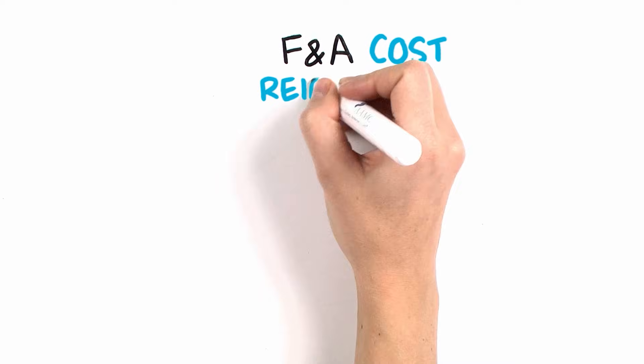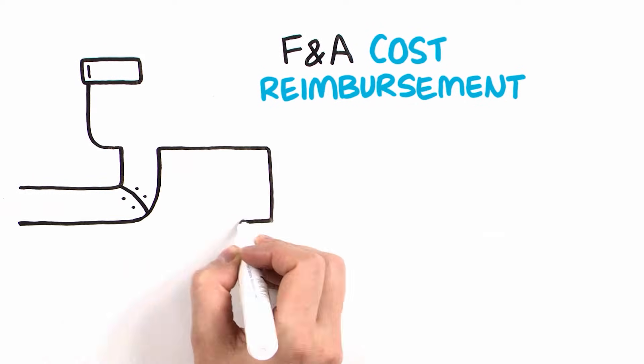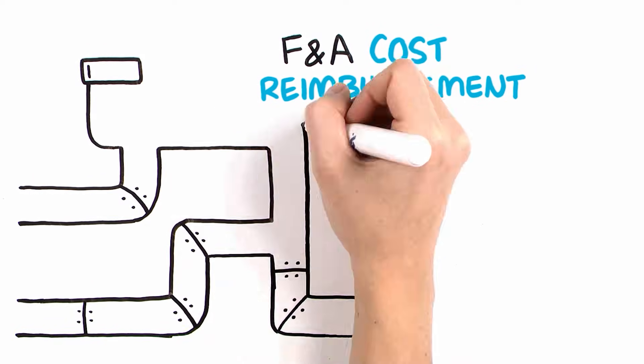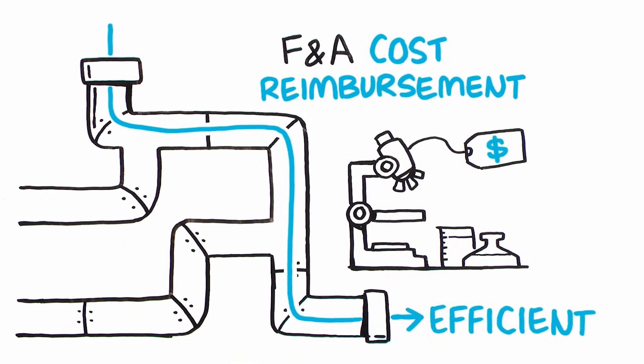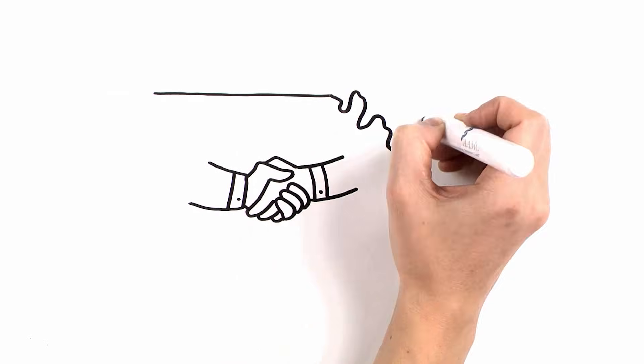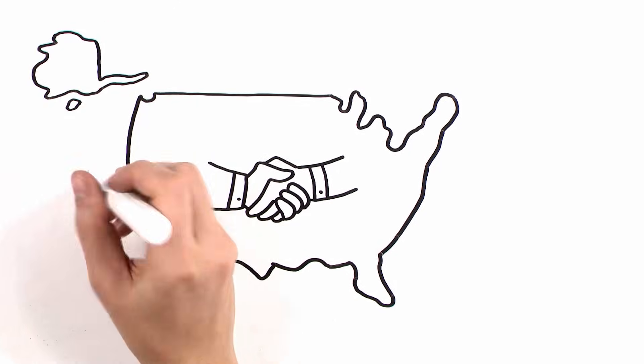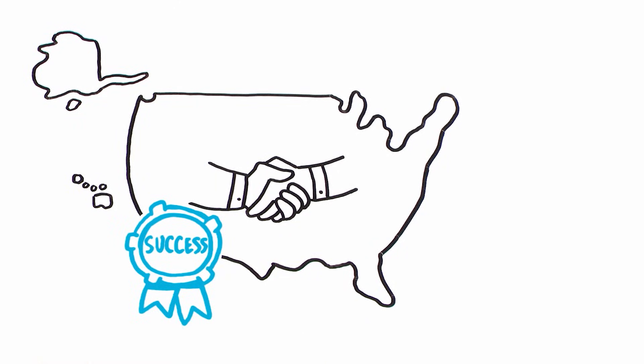Although the F and A cost reimbursement process is complex and not always easy to understand, it is efficient and based on actual research costs. Moreover, it has allowed the decades-long partnership between universities and the federal government to work.